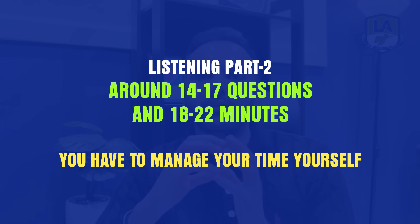Once you're done with summarize spoken text, part two will start. In part two you will have around 14 to 17 questions and 18 to 22 minutes, and you have to manage your time yourself. It's not that you get a fixed time per question, so it is very important that you manage your time properly. The most important question types are at the end, and students often waste a lot of time on unimportant questions and then don't have enough time for the important ones at the end.